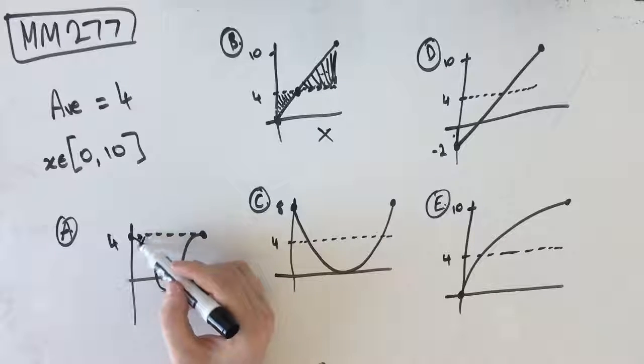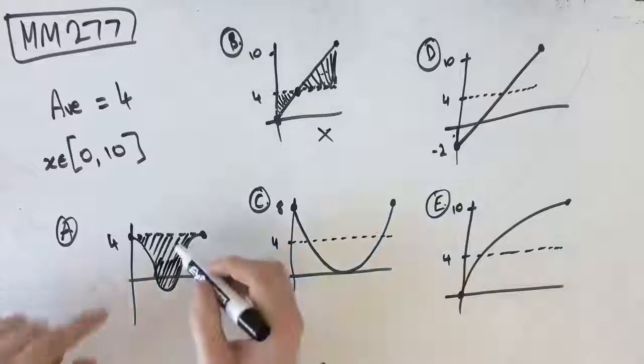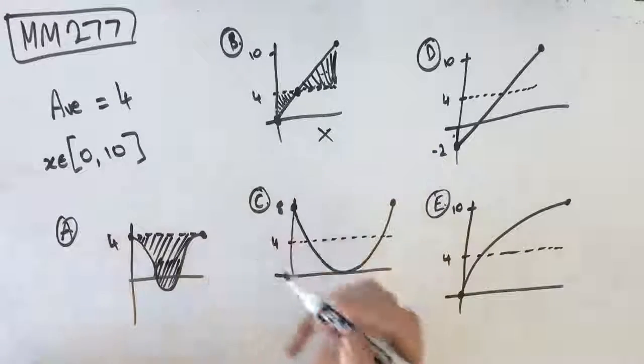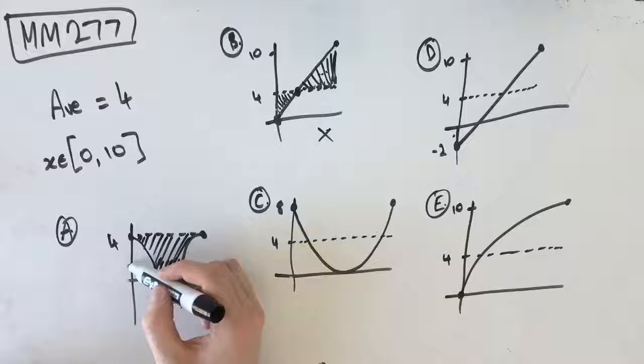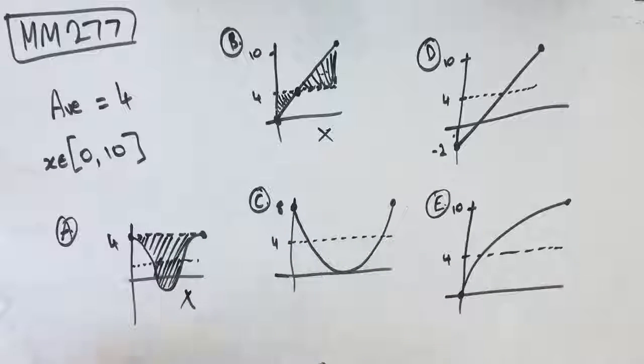Now option A has just this area under here. It actually has no area on the other side, so it's definitely not going to be our average value because the average value should be somewhere down here, where the area on either side should be equal.